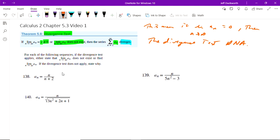So 138: the limit as n approaches infinity of n over n plus 2. We can use L'Hôpital's rule on this. That equals the limit as n approaches infinity, the derivative of the numerator is 1, derivative of denominator is 1, so that's just 1.